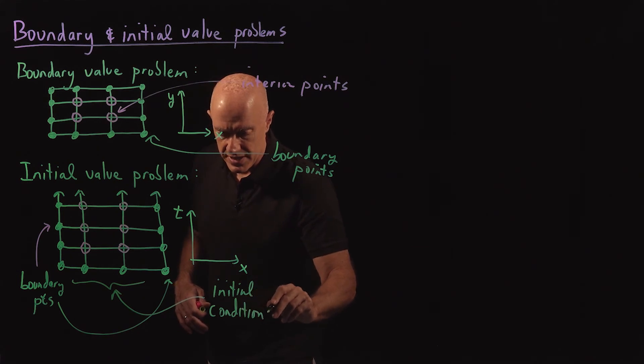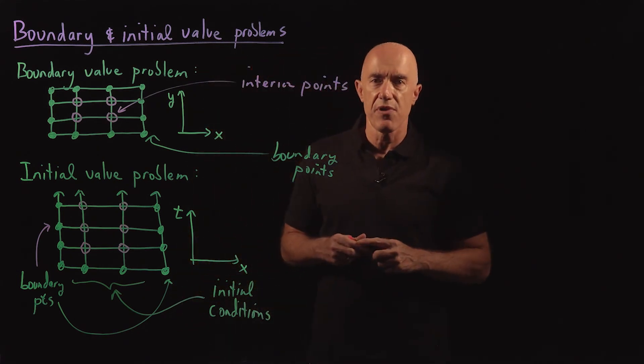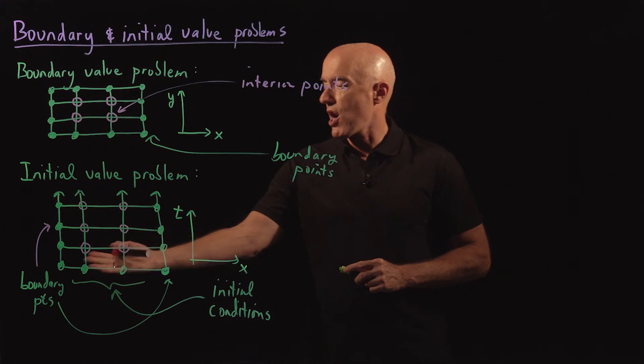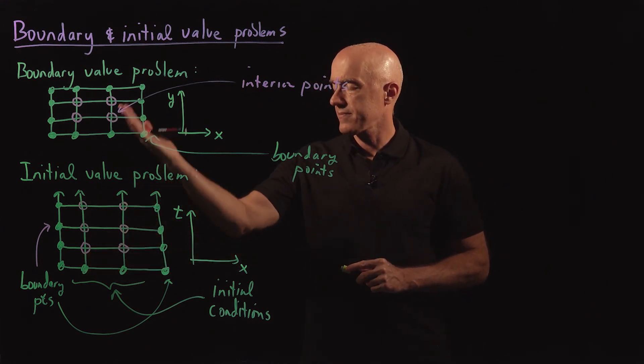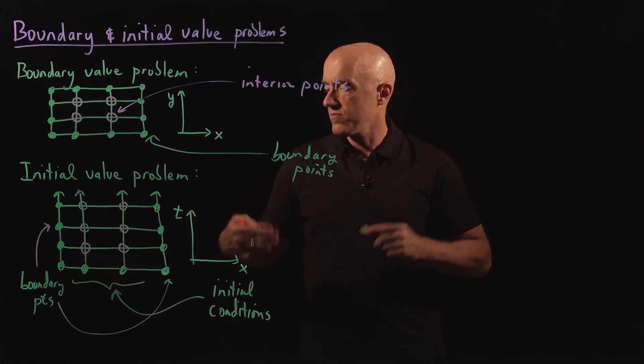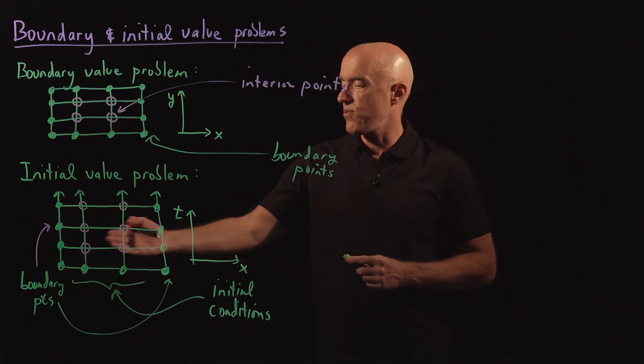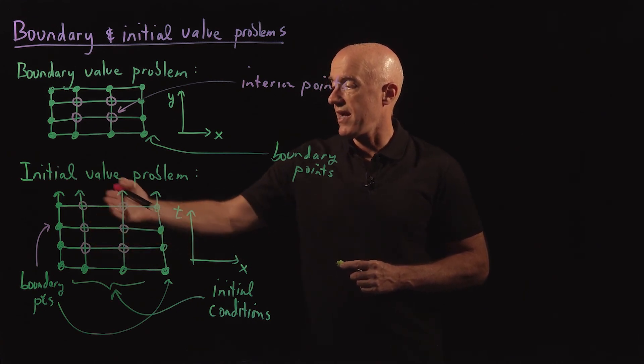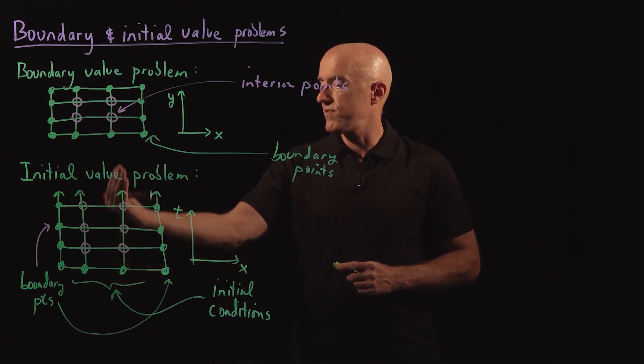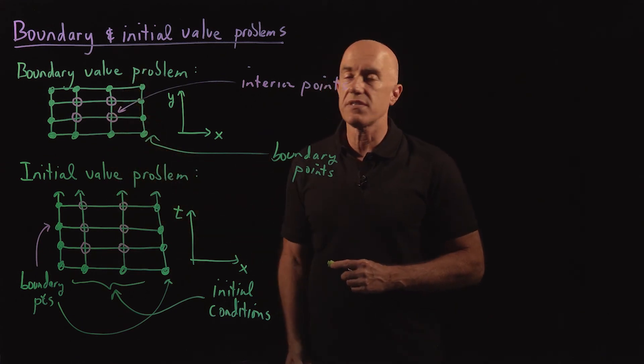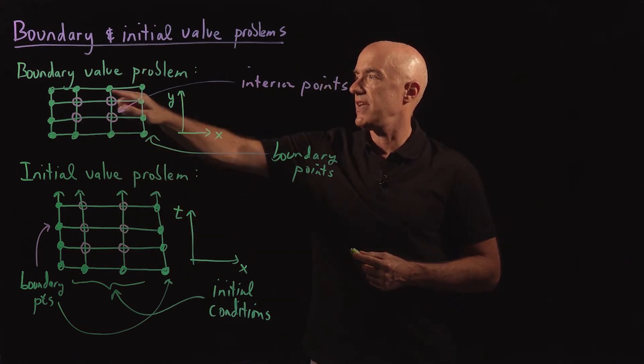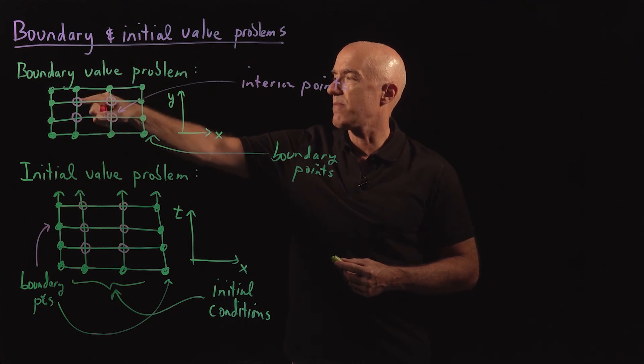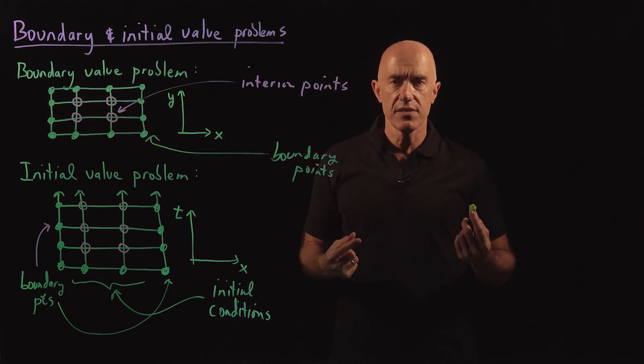The solution of the initial value problem, then, is to march the initial conditions forward in time. So we're trying to find these interior points, but we're finding them one line at a time as the solution moves forward. So it's a very different type of solution. Here in the boundary value problem, we're finding all of the interior points at once, right?